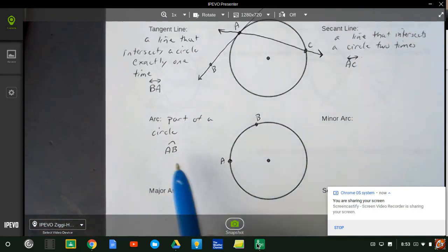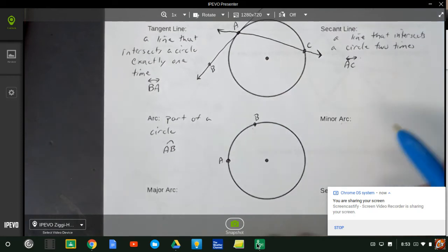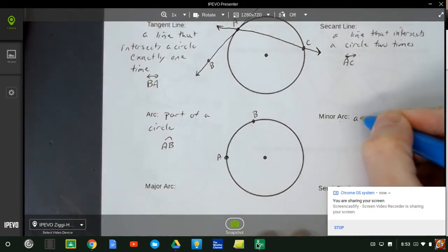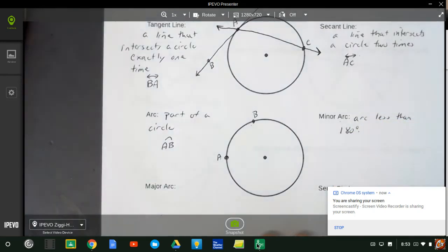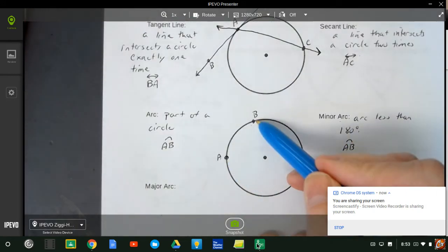And whenever we name it with two letters, we're always talking about the shortest distance. Because that short distance is what gives me a minor arc. A minor arc is an arc less than 180 degrees. That's what makes a minor arc. So in this case, arc AB is a minor arc, because it's less than 180.